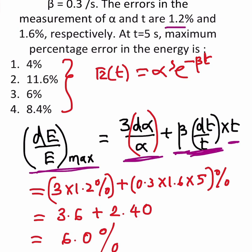So we have taken beta t times the error of the time. The error of alpha they have given as 1.2 percent, which I have substituted here. 3 times the error of alpha. Then beta value they have given as 0.3, which I have substituted here, and the error in time t they have given as 1.6 percent, which I have substituted here. And this t value they have given as t equals 5 seconds, which I have substituted here.